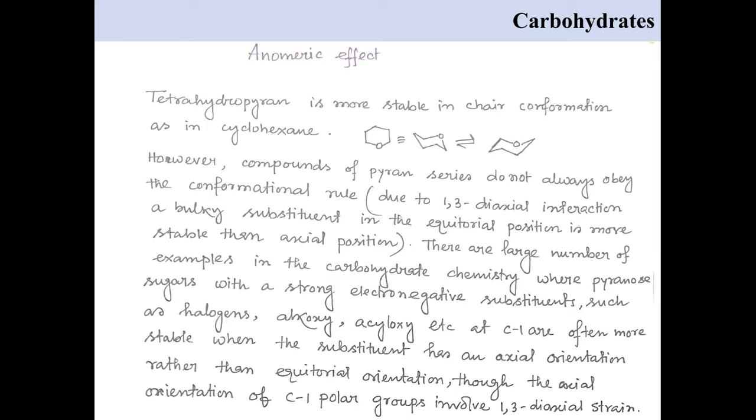If we define this anomeric effect, we can say that the phenomenon of extra preference for an axial orientation over the equatorial orientation of an electronegative substituent at the anomeric carbon of a pyranose derivative in solution is known as the anomeric effect.